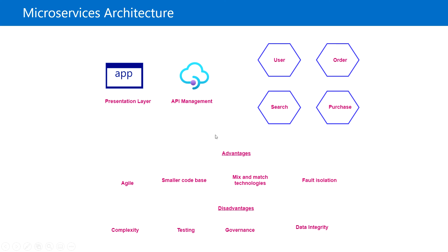In this microservices architecture, the application serves as the presentation layer, and through API management it will call each of the service modules. When the customer searches for a product, through the API management it will contact the search module. When they are going to purchase a product, it will call the purchase module to place the order.